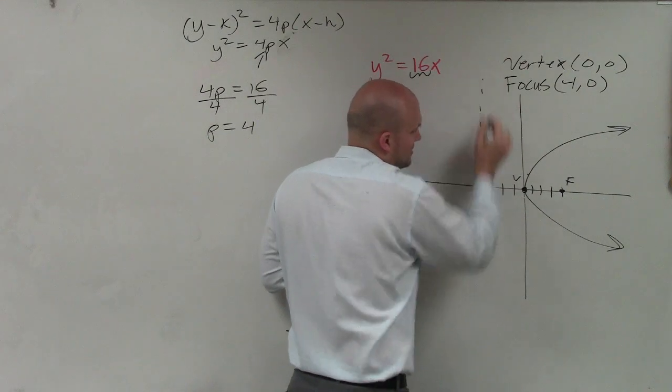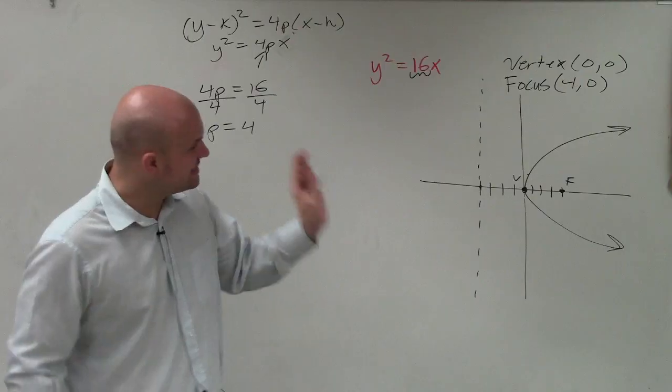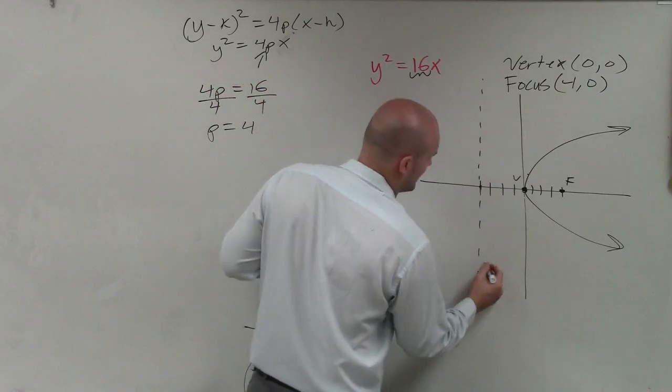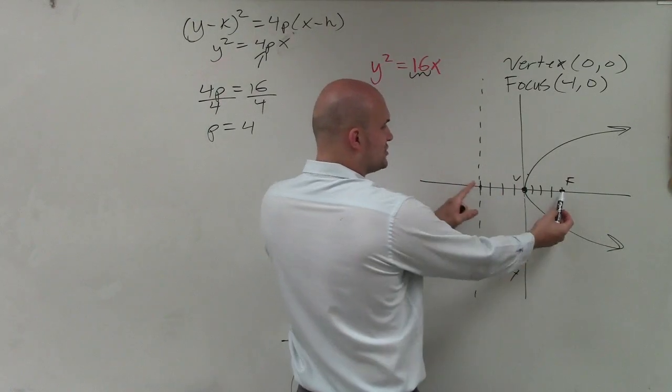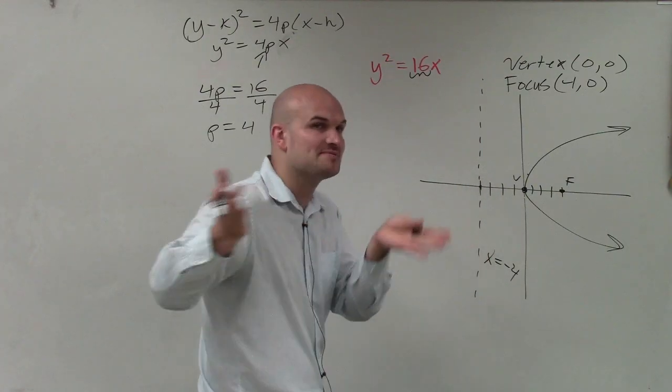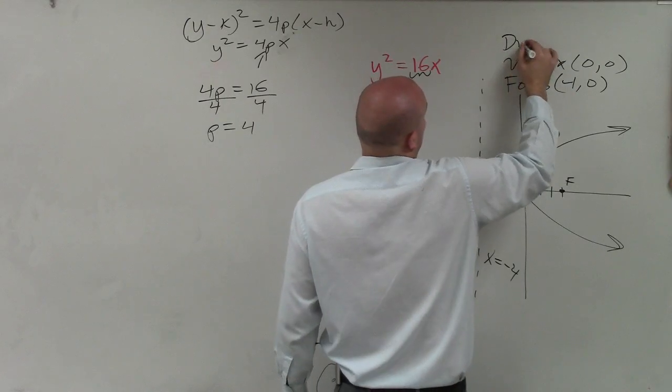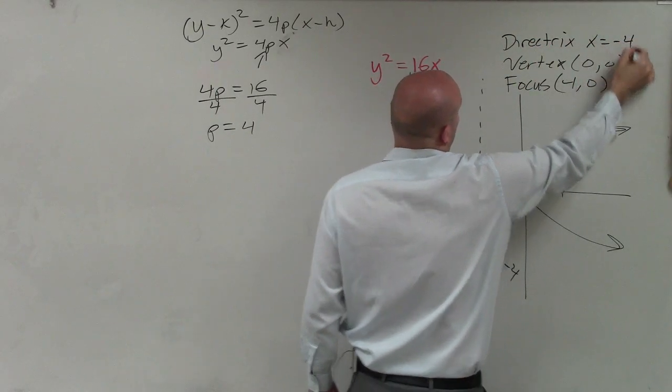But remember, the directrix is going to be a line. And since it's a vertical line, we know that it is going to be in the form x = -4. And just to confirm, make sure that the distance from the vertex to the focus and the vertex to the directrix is exactly the same. The absolute distance is exactly the same. And therefore, I can just write in the directrix is x = -4.